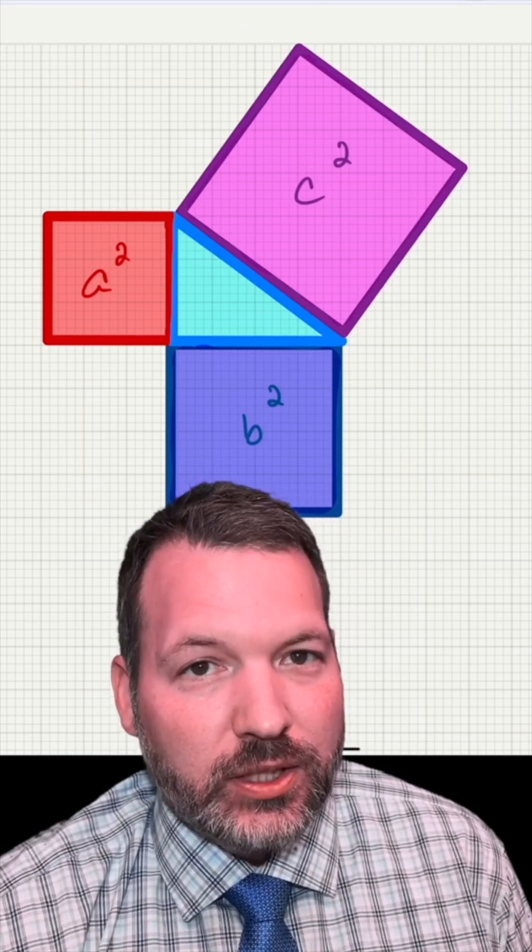Squares are actually squares. Normally, when we first learn Pythagorean Theorem, we learn it in terms of symbols.